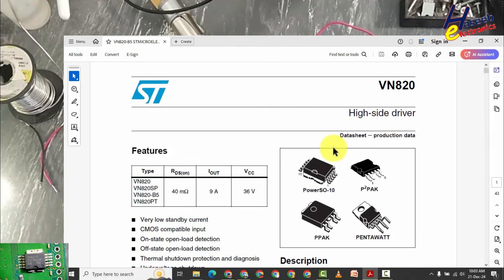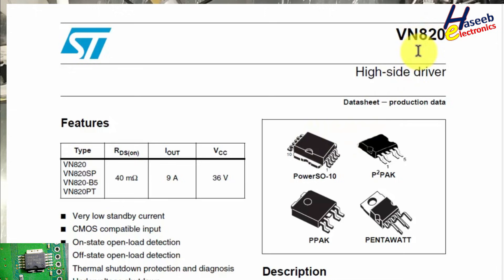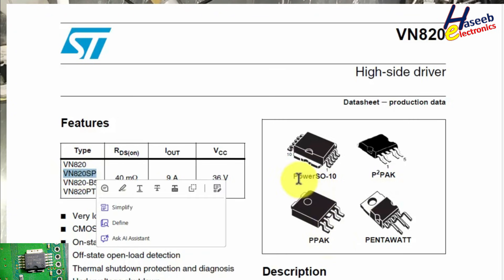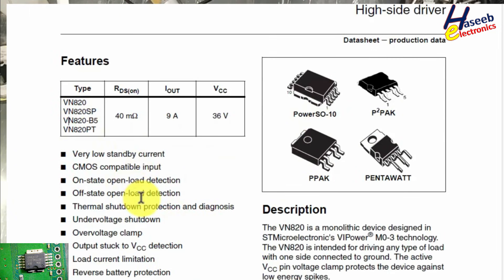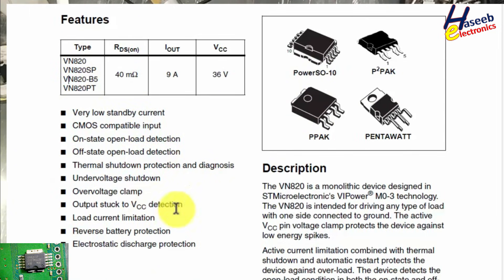VN820 is available in four different package sizes: PowerSO-10, P square pack, Pentawatt, and P pack. In our case, VN820 SP is the PowerSO-10 package. It has low standby current, is CMOS compatible.